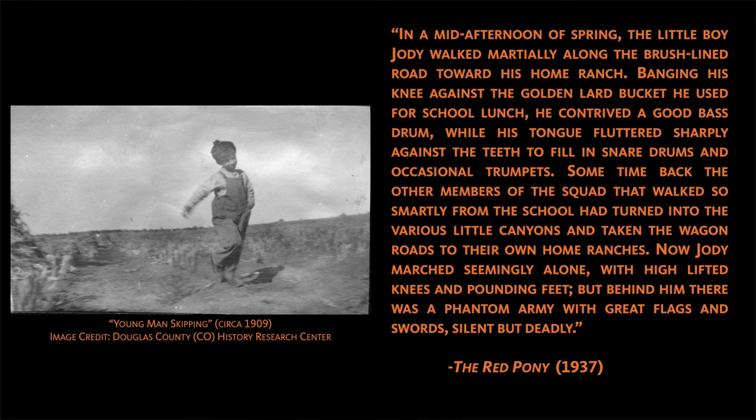Here's one example. In John Steinbeck's novella 'The Red Pony,' the third chapter begins with the following description. In a mid-afternoon of spring, the little boy Jody walked marshally along the brush-lined road towards his home ranch. Banging his knee against the golden lard bucket he used for school lunch, he contrived a good bass drum while his tongue fluttered sharply against the teeth to fill in snare drums and occasional trumpets. Some time back, the other members of the squad that walked so smartly from the school had turned into the various little canyons and taken the wagon roads to their own home ranches. Now, Jody marched seemingly alone, with high-lifted knees and pounding feet, but behind him there was a phantom army, with great flags and swords, silent but deadly.